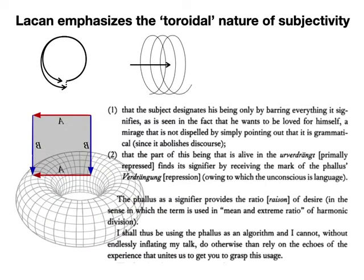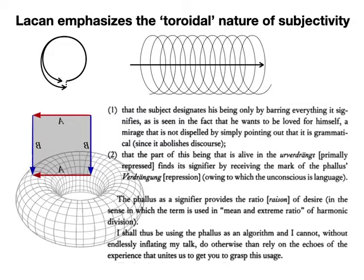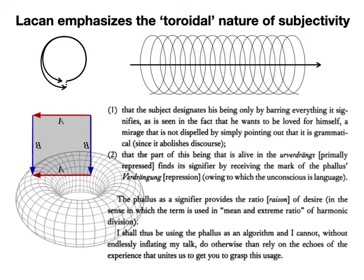For Lacan, all subjectivity is toroidal. So, it's important for us to grasp the torus as a machine that combines two opposites. The subject strives for being, but lives within the symbolic and imaginary, which resist any representation of the real.